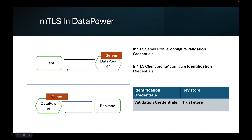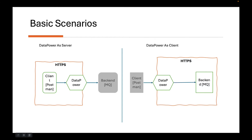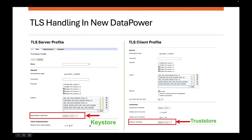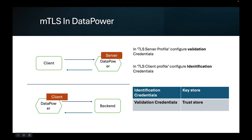Let us talk about a variation: mutual TLS, or MTLS. On the top left corner, DataPower is acting as a server. A client tries to connect with DataPower, and at the same time DataPower also demands a certificate from the client in order to authenticate it. These scenarios are very common in B2B. In the bottom left corner, you see DataPower connecting with a backend as a client, where the backend may demand a certificate from DataPower to identify which client is connecting — this is also a mutual TLS scenario.